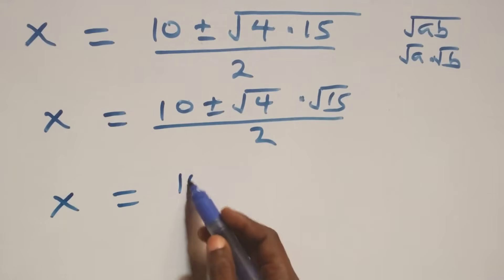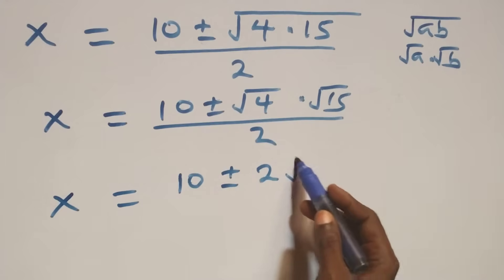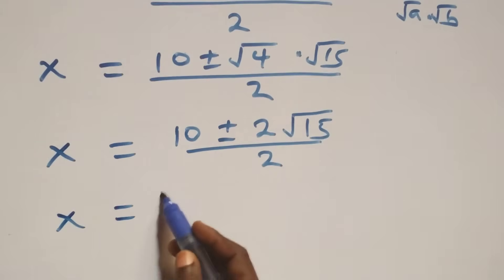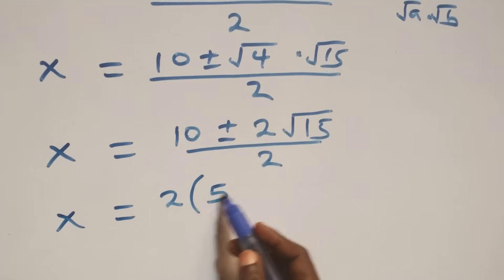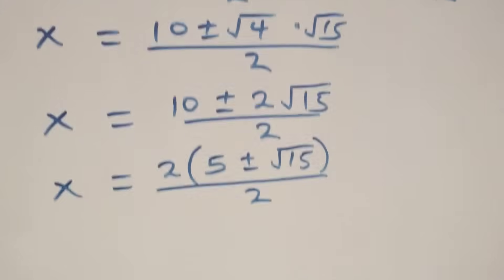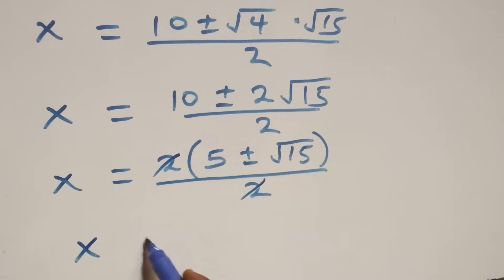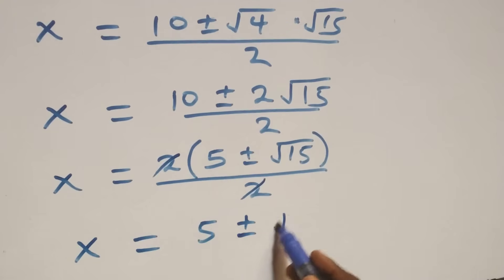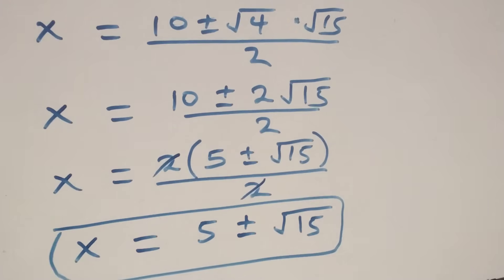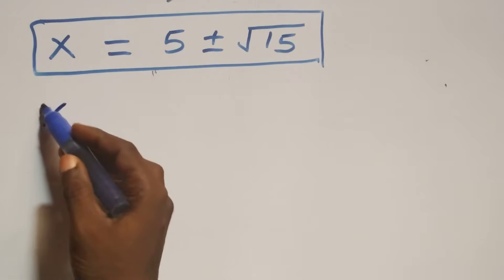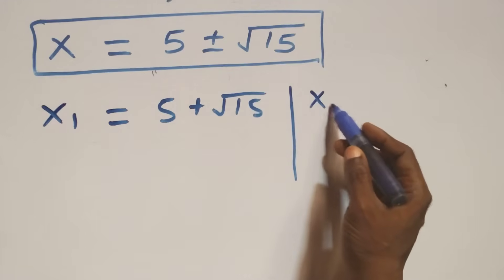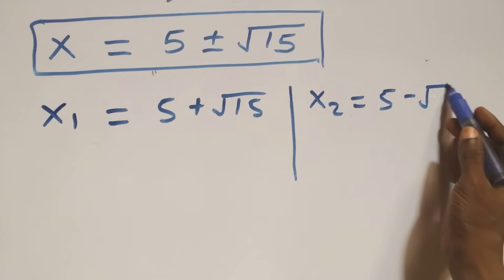This becomes x equals (10 plus or minus 2√15) over 2. Factoring out 2 from the numerator gives 2(5 plus or minus √15) over 2. The 2s cancel, leaving x equals 5 plus or minus √15. So we have two possible values: x₁ equals 5 plus √15, and x₂ equals 5 minus √15.